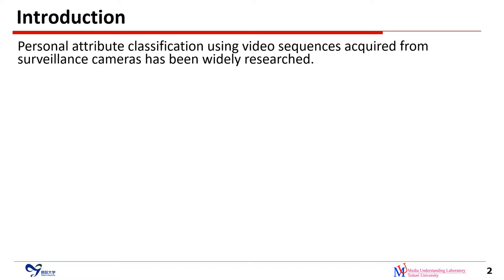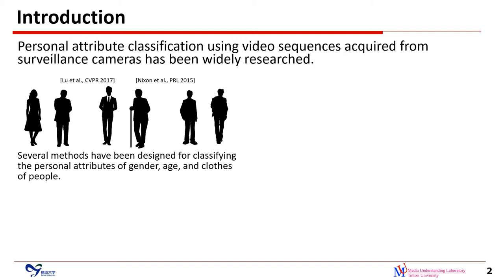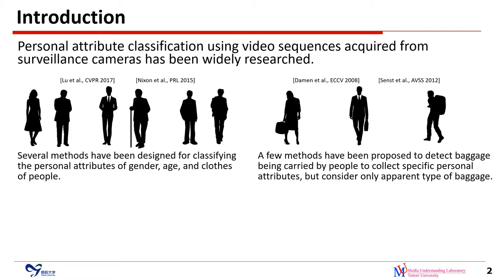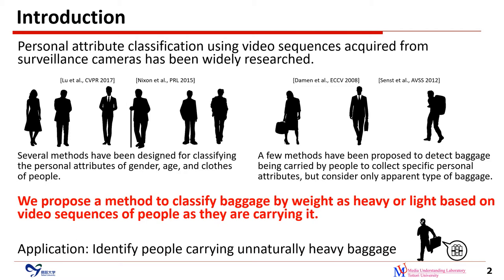Personal attribute classification using video sequences acquired from surveillance cameras has been widely researched. Several methods have been designed for classifying the personal attributes of gender, age, and clothes of people. A few methods have been proposed to detect baggage being carried by people, but consider only the apparent type of baggage. We propose a method to classify baggage by weight as heavy or light, which can be used to identify people carrying unnaturally heavy baggage at major transportation hubs.